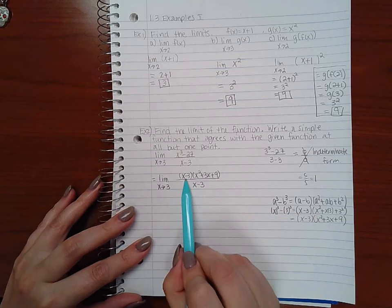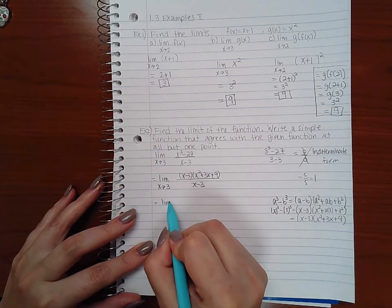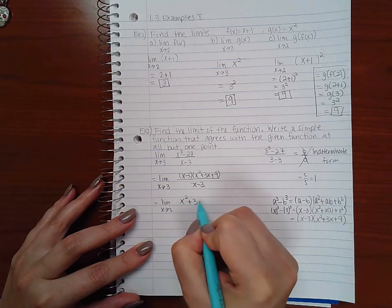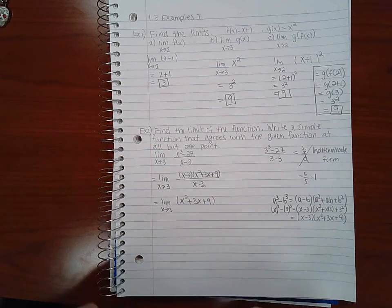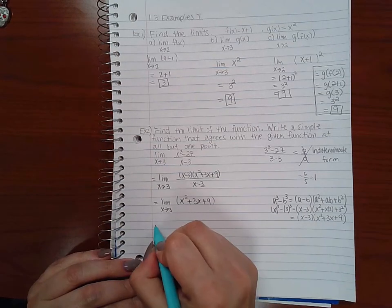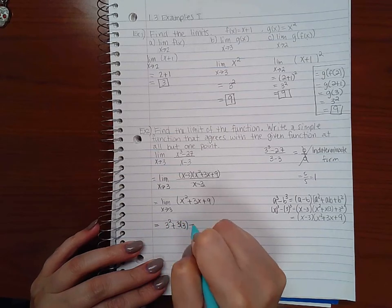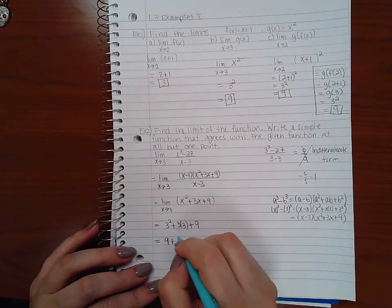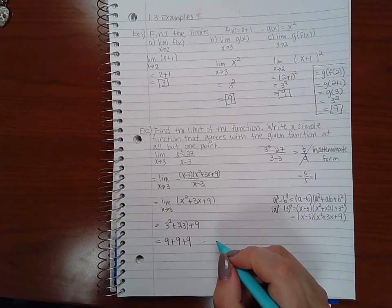And then you'll notice this factor and this factor will reduce, leaving me with this expression. So I have to take the limit of this expression. Well now I won't have the zero in the denominator when I plug in three, so now I can try direct substitution, and I end up with nine plus nine plus nine which equals 27. And that's the limit of this function.